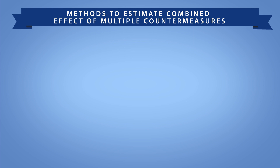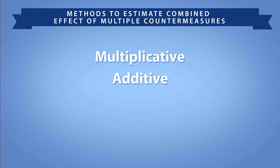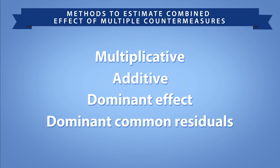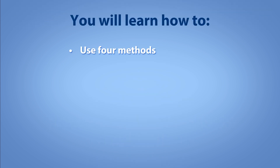Part 1 of this two-part series introduced four potential methods: the multiplicative method, the additive method, the dominant effect method, and the dominant common residuals method. In this video, you will learn how to use each of the four methods to estimate the combined effect of multiple countermeasures.